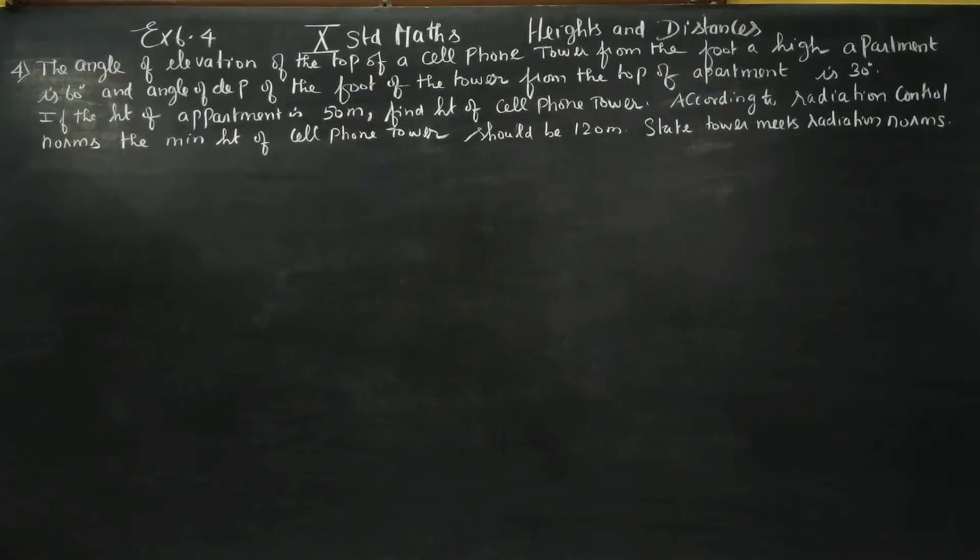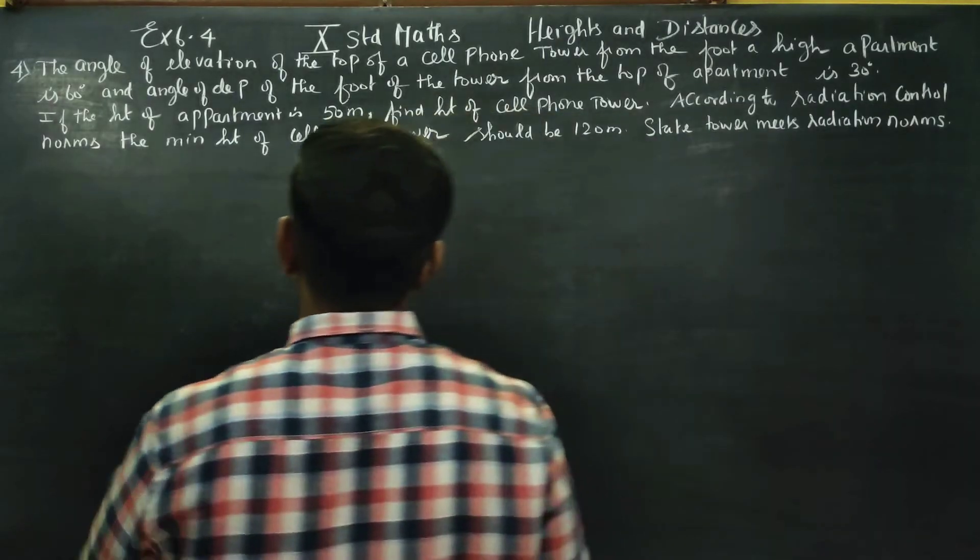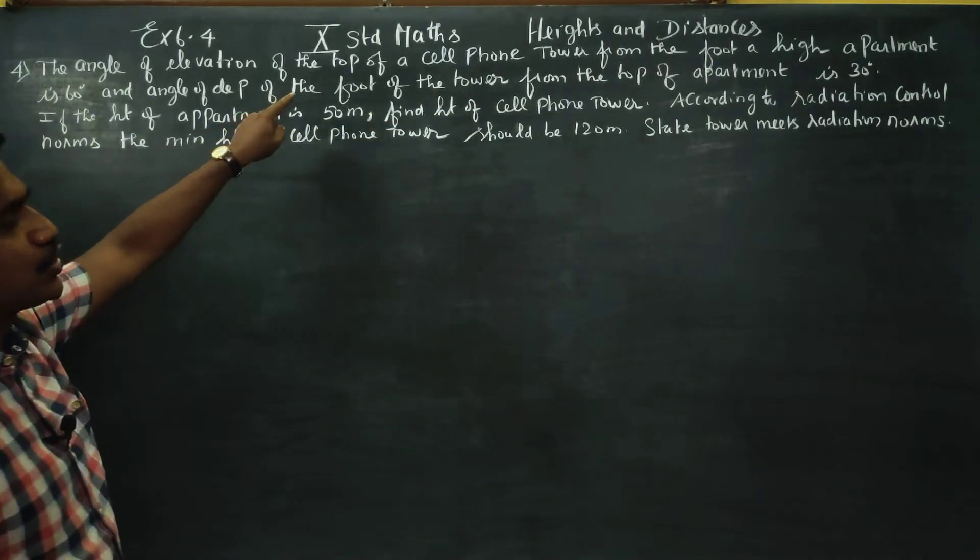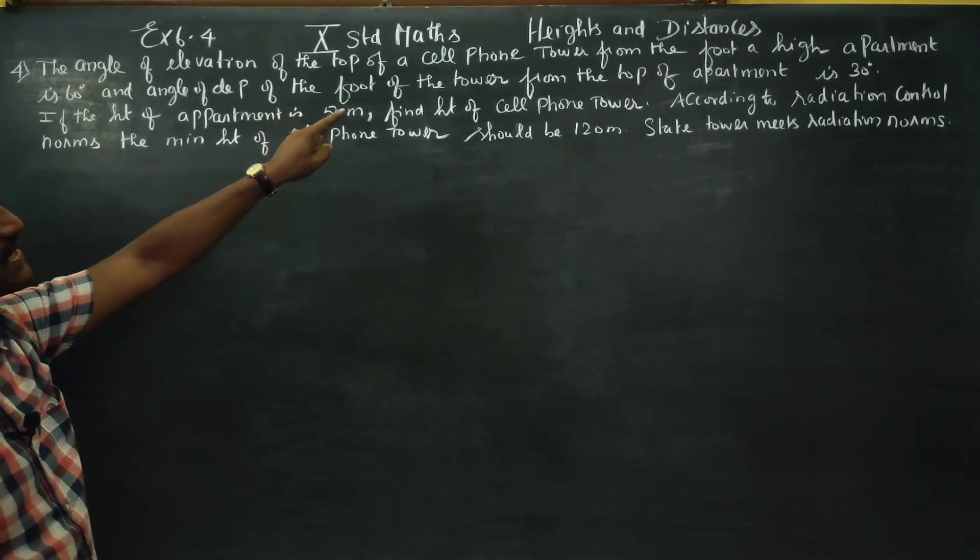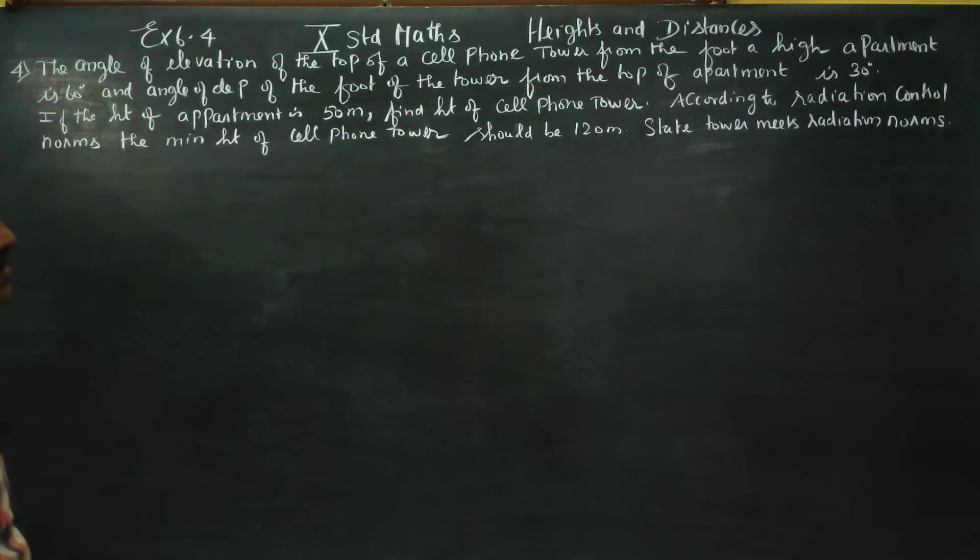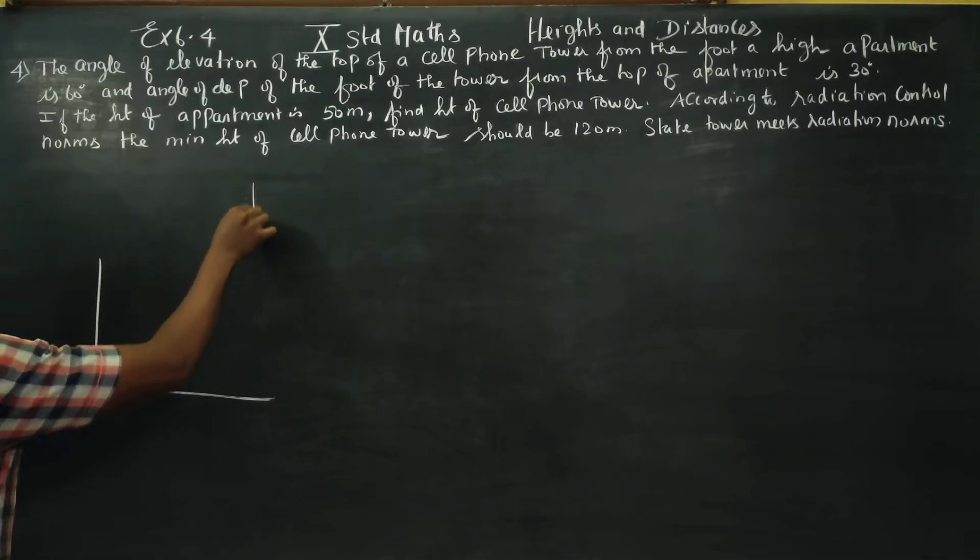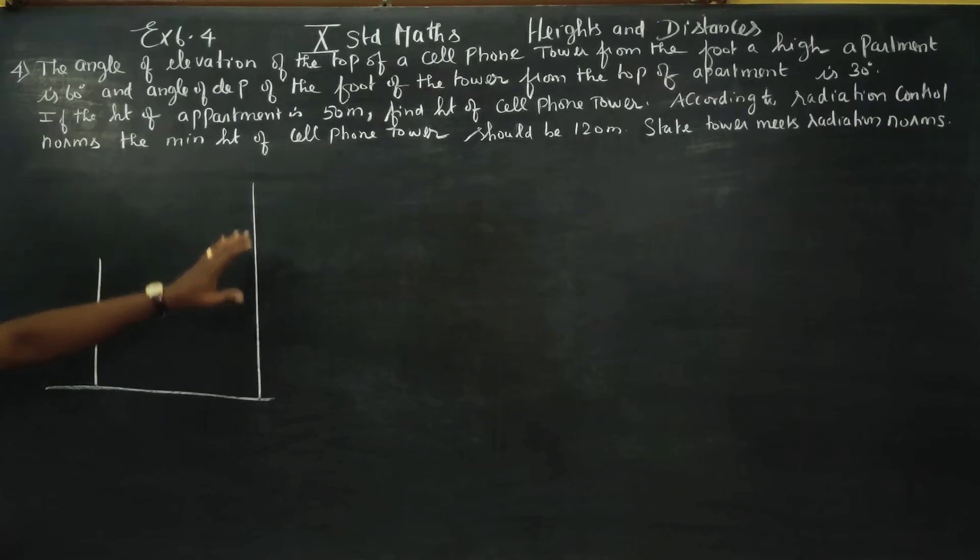Hello 10 standard students, in exercise number 6.4 sum number 4. The angle of elevation of the top of a cell phone tower from the foot of a high apartment is 60 degrees. This is my apartment. This is my cell phone tower.